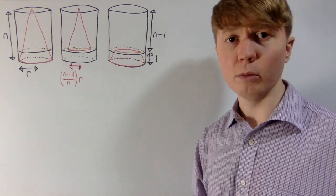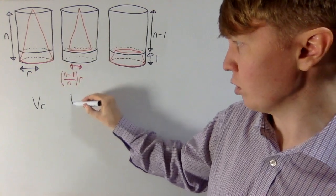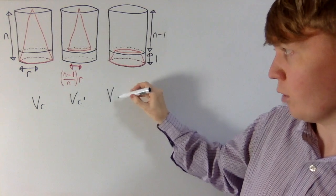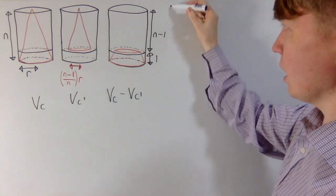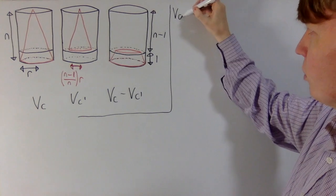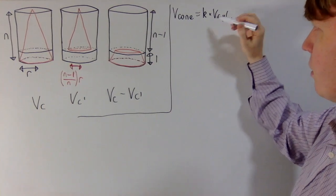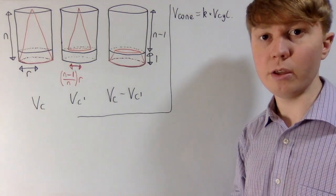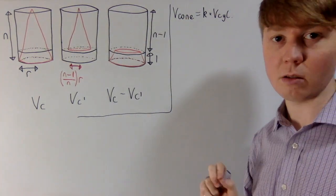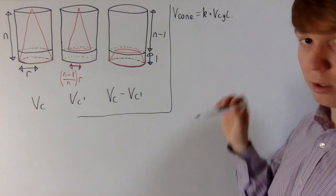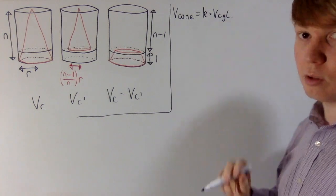So how are we going to turn this into a proof for the formula for the volume of a cone? We'll be interested in the volume of this cone VC, and the smaller cone VC dash, and the volume of our frustum is VC minus VC dash. This proof relies on assuming that the volume of a cone inside a cylinder is always the same constant k times the volume of your cylinder. We need to show that k equals one third, since we know the volume of a cylinder is πr² times the height.